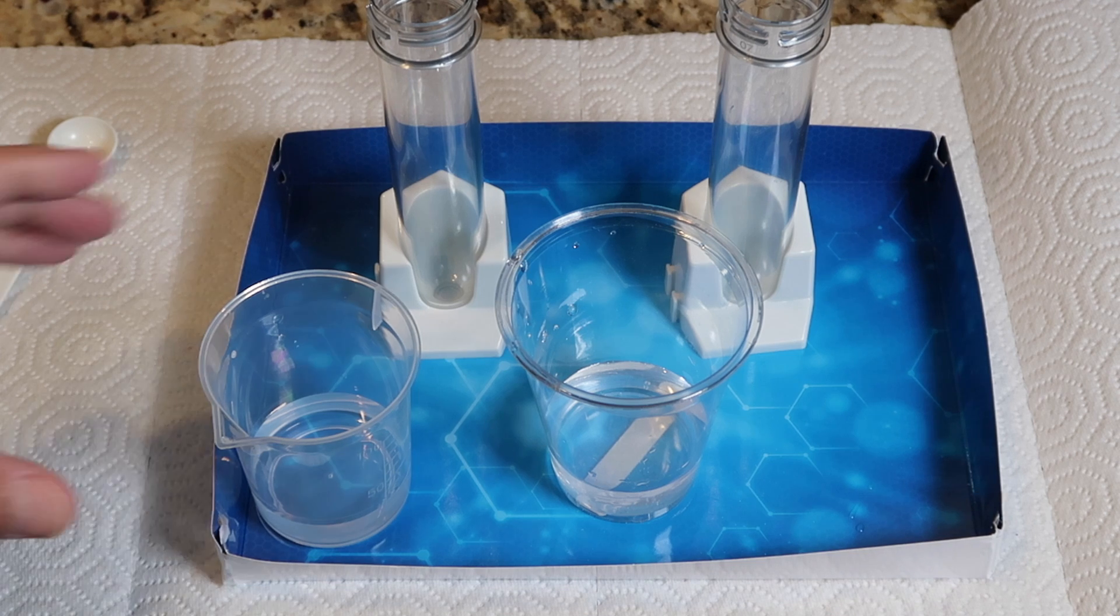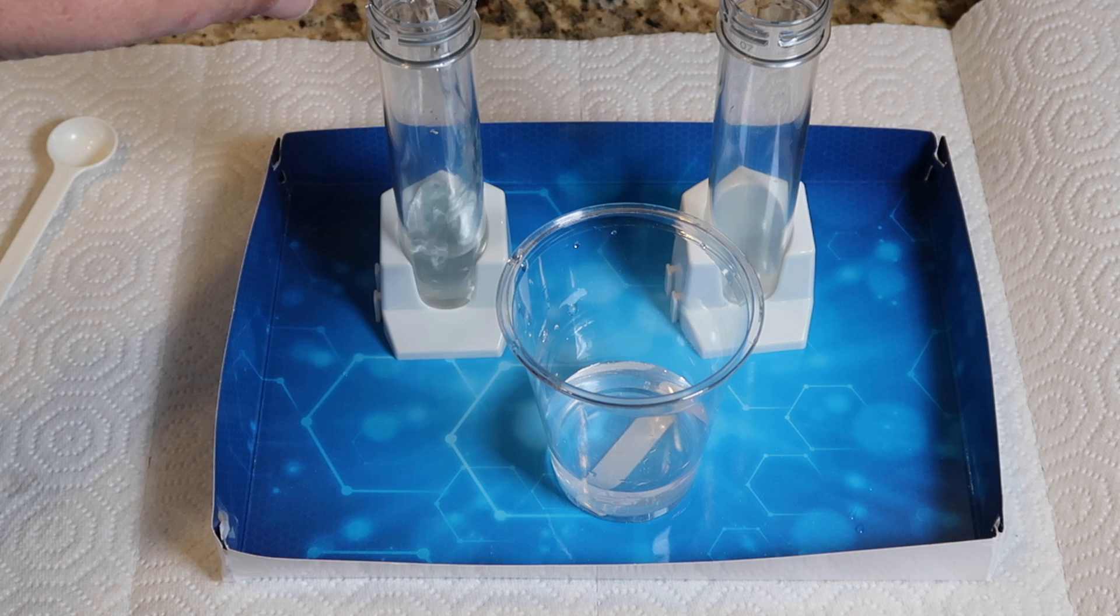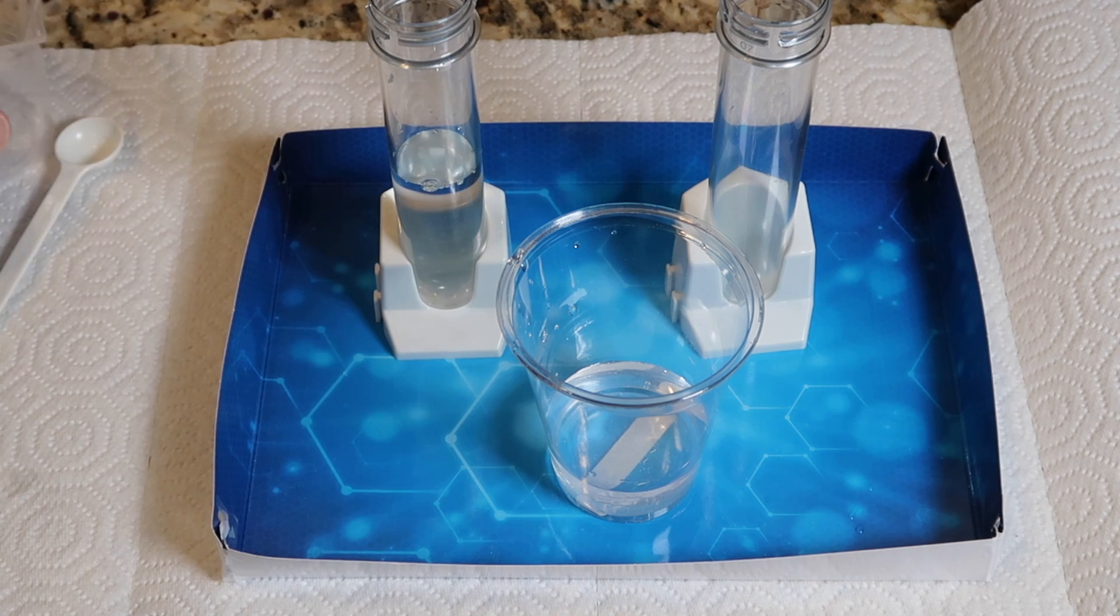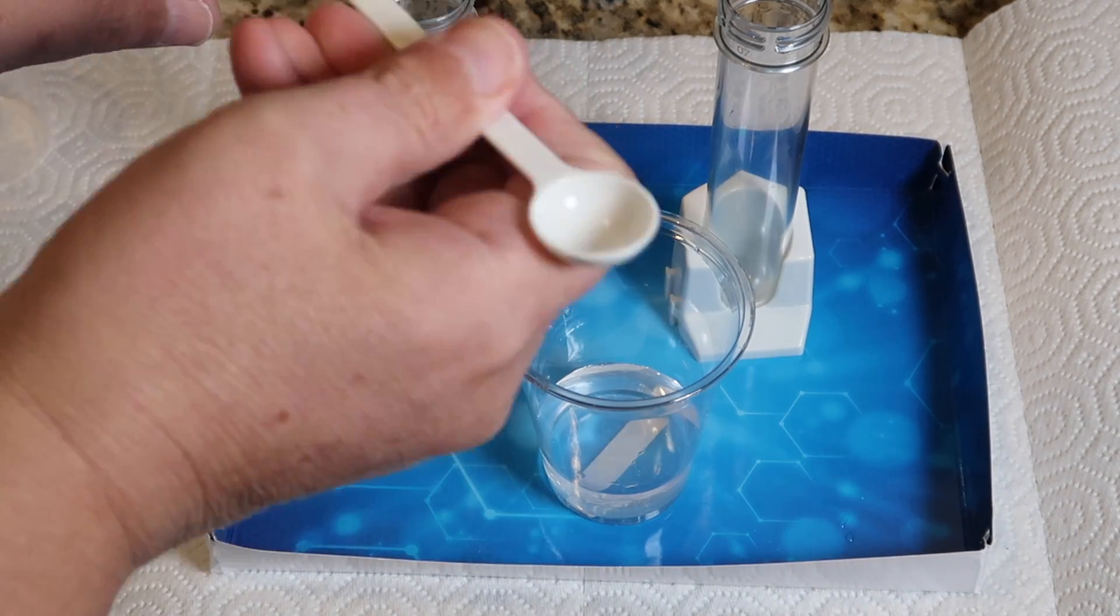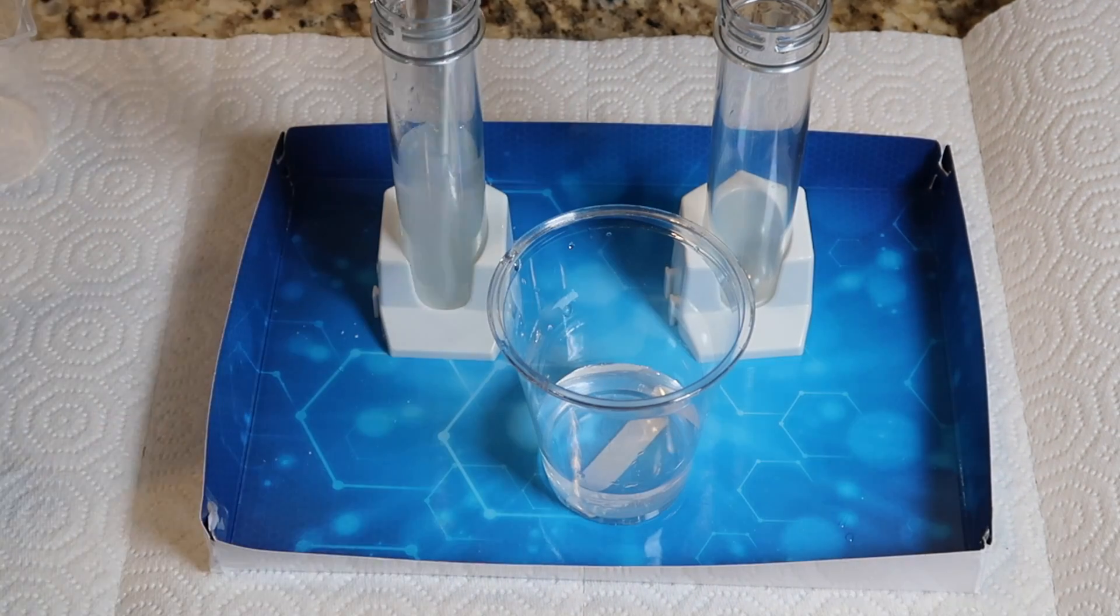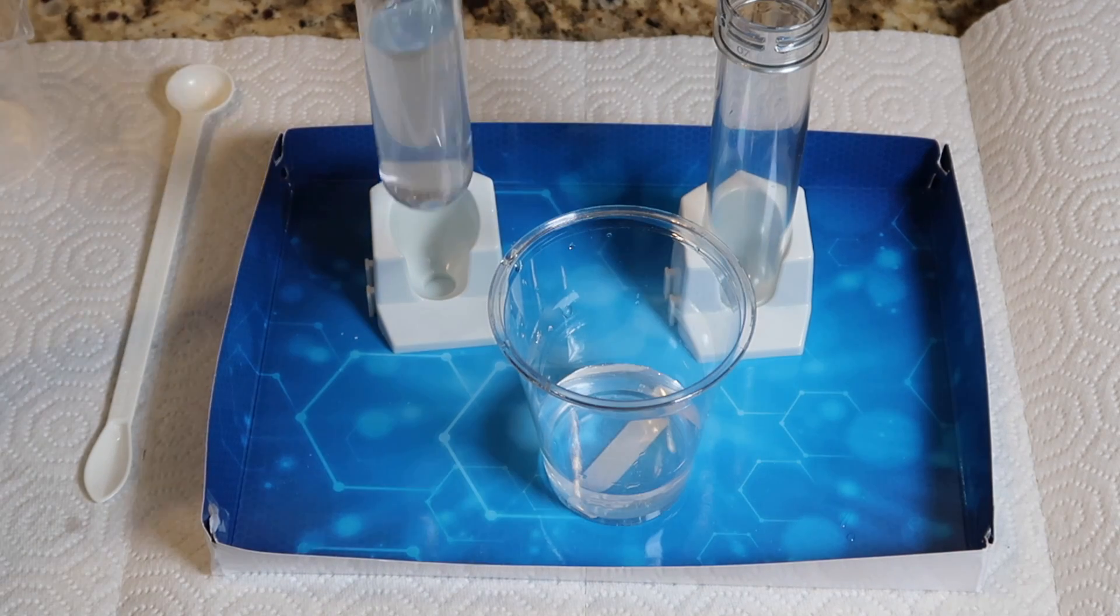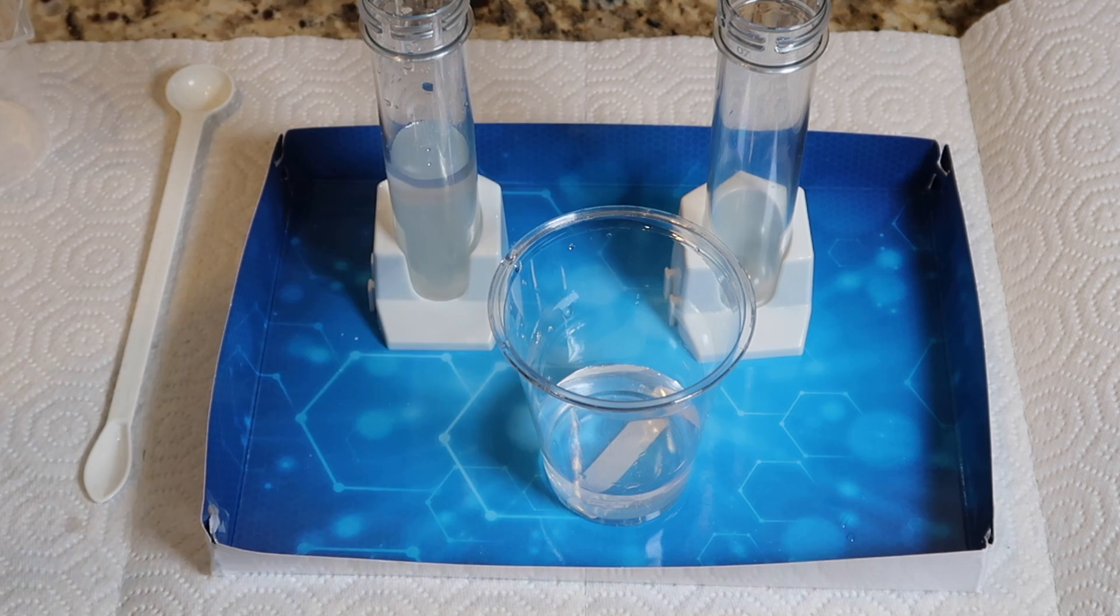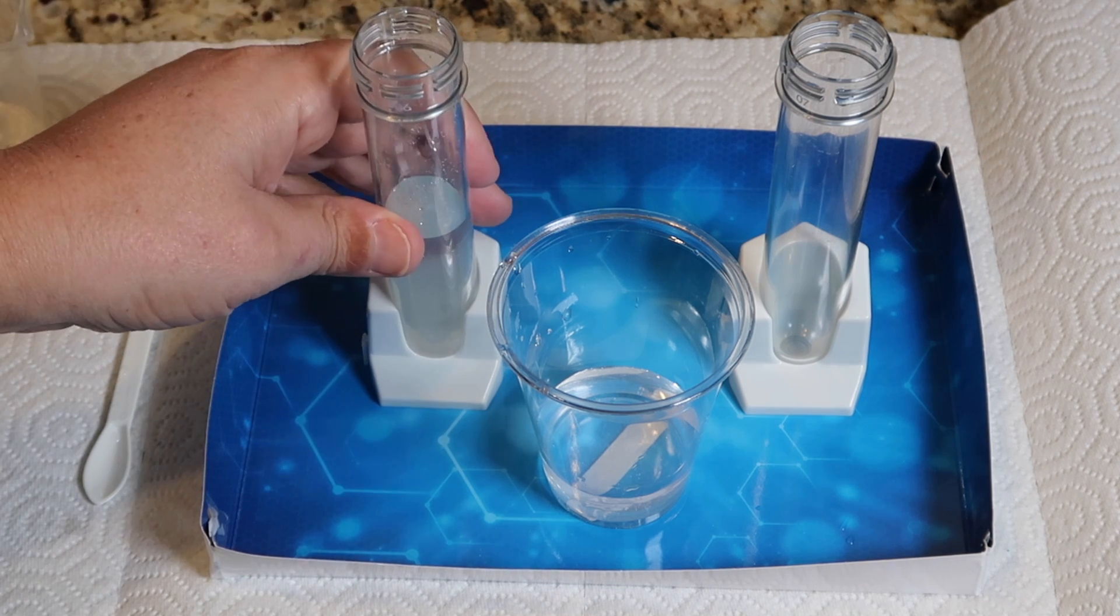Now we're going to take another 30 milliliters of water and put it into the first test tube, into which we're going to dissolve two medium scoops of calcium chloride. I think that's a good solution. Now when we mix these two solutions together, we should get a milky white solution, which is basically turbid. In other words, the particles are suspended in the solution rather than dissolved.